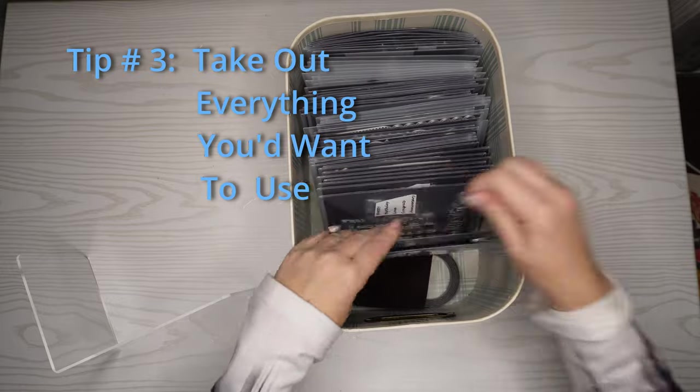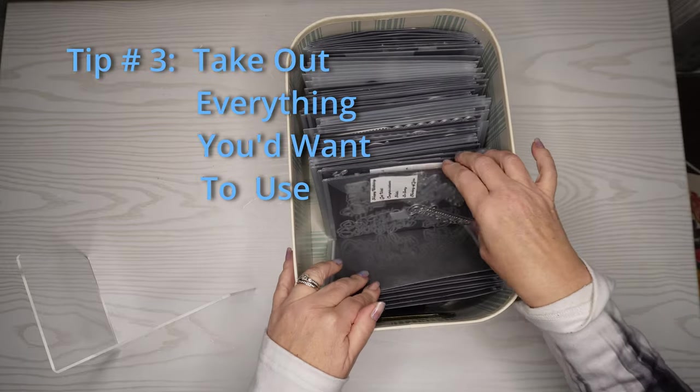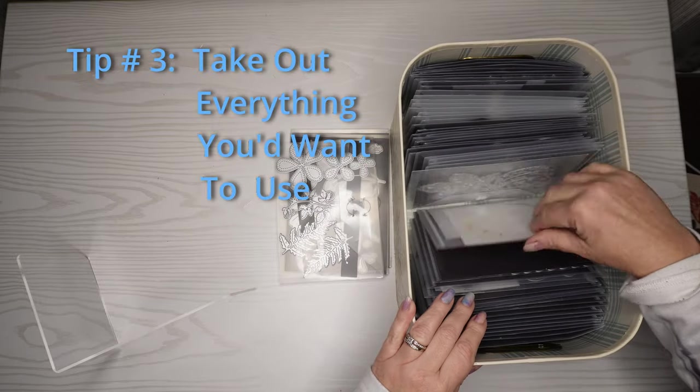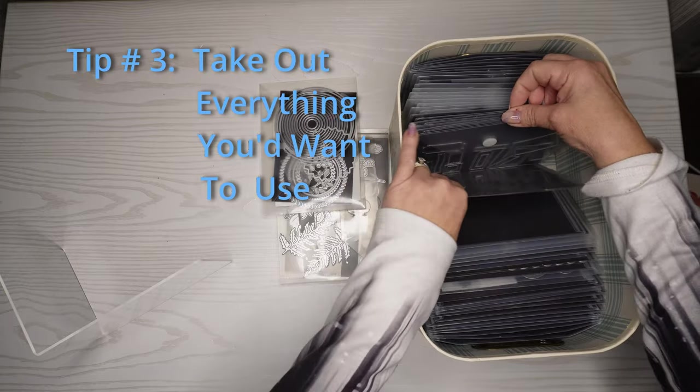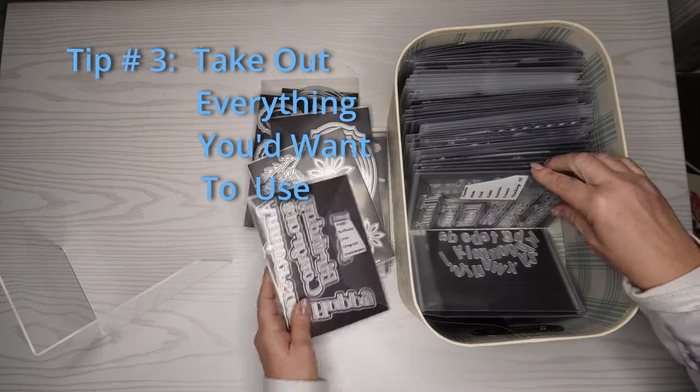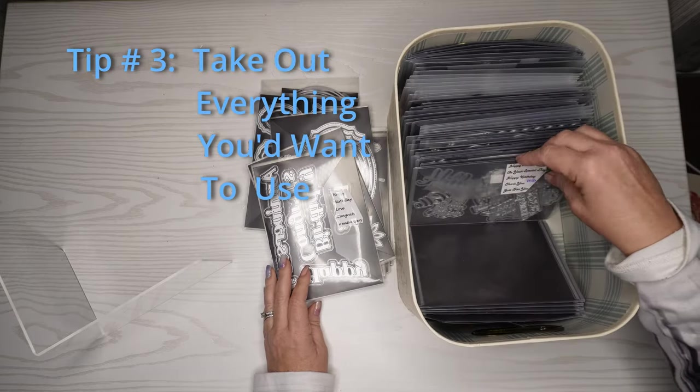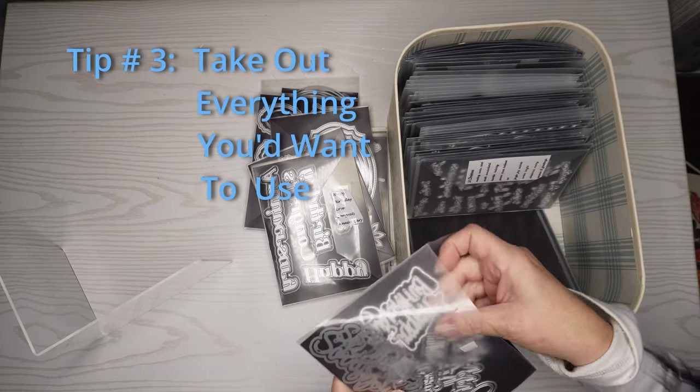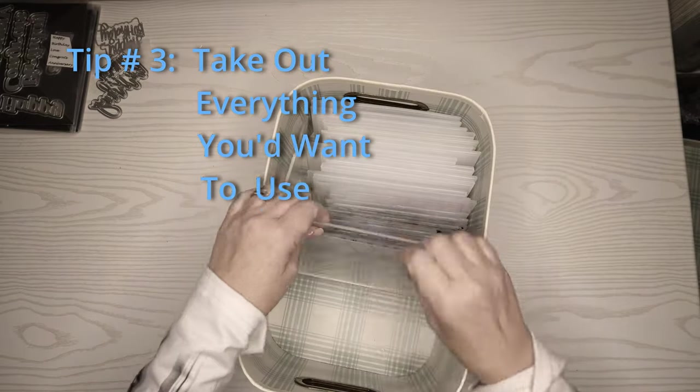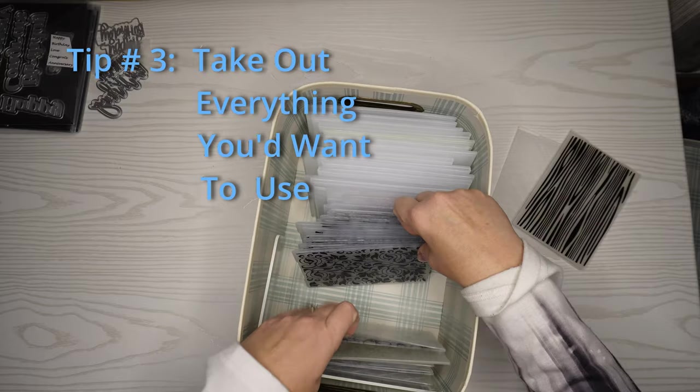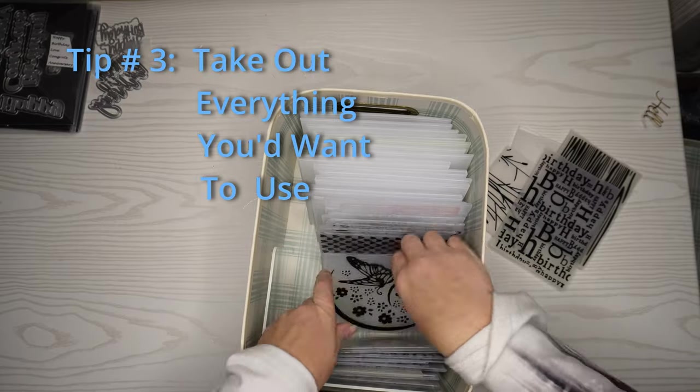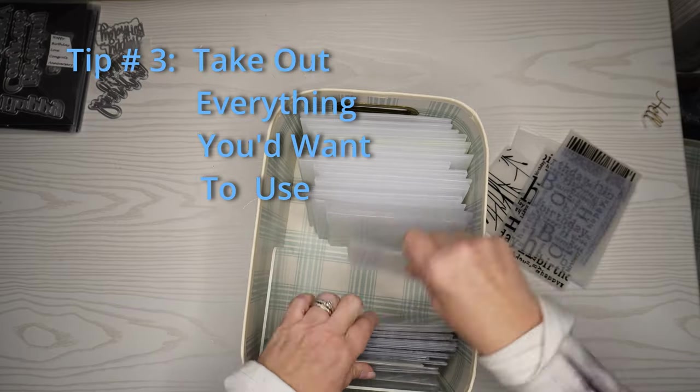Next, you're going to want to take out everything you'd want to use that you haven't used yet or haven't used in a while. For me, I was trying to make some masculine cards today. I have three birthdays that are for men in the month of April, so I'm taking out anything that is inspiring me. As you saw, I just flipped through all of my embossing folders, my die cuts, and my stamps, so it gave me some ideas. Now I'm into my embossing folders, so I'll take out some of these. I have in the front all regular embossing folders, and then the back ones are my 3D embossing folders.